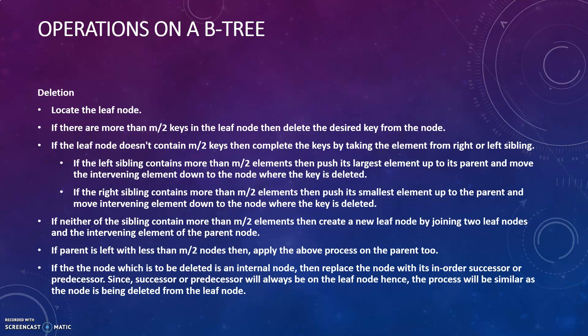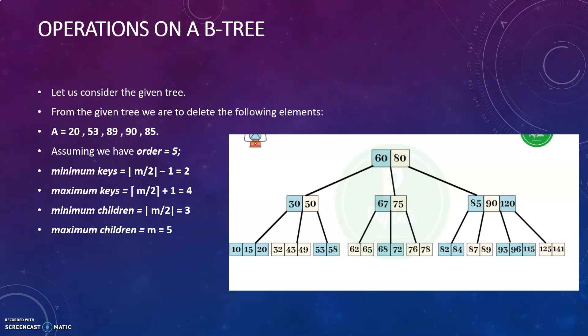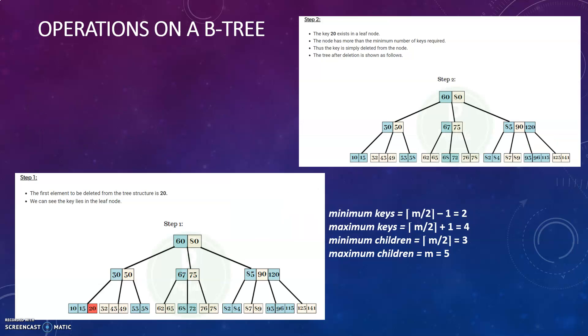We will see this using an example. Consider this tree and we want to delete elements 20, 53, 89, 90, and 85. The minimum number of keys a particular node must have is 2, the maximum number of keys allowed is 4, minimum children is 3, and maximum children is 5. So the order is 5 here.